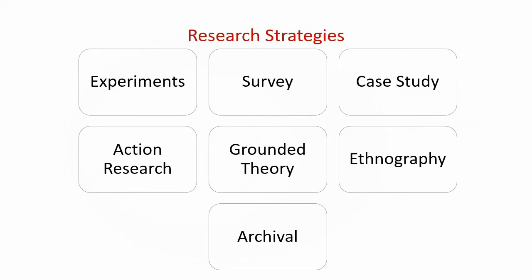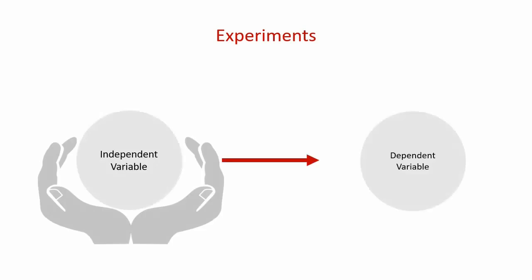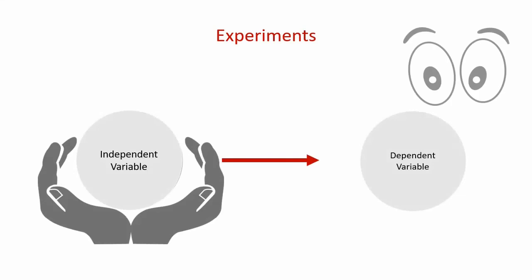Let's start with experiments. The purpose of experiments is to understand causal links between an independent variable and a dependent variable. With this type of research, you as the researcher manipulate the independent variable and observe its effect on the dependent variable.